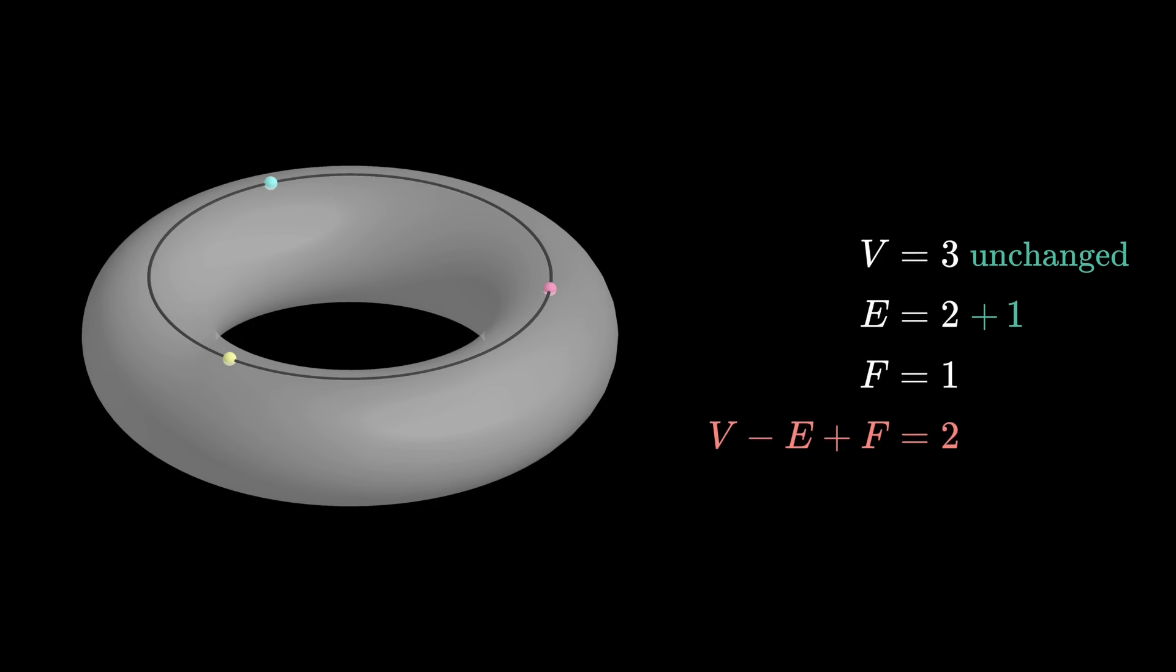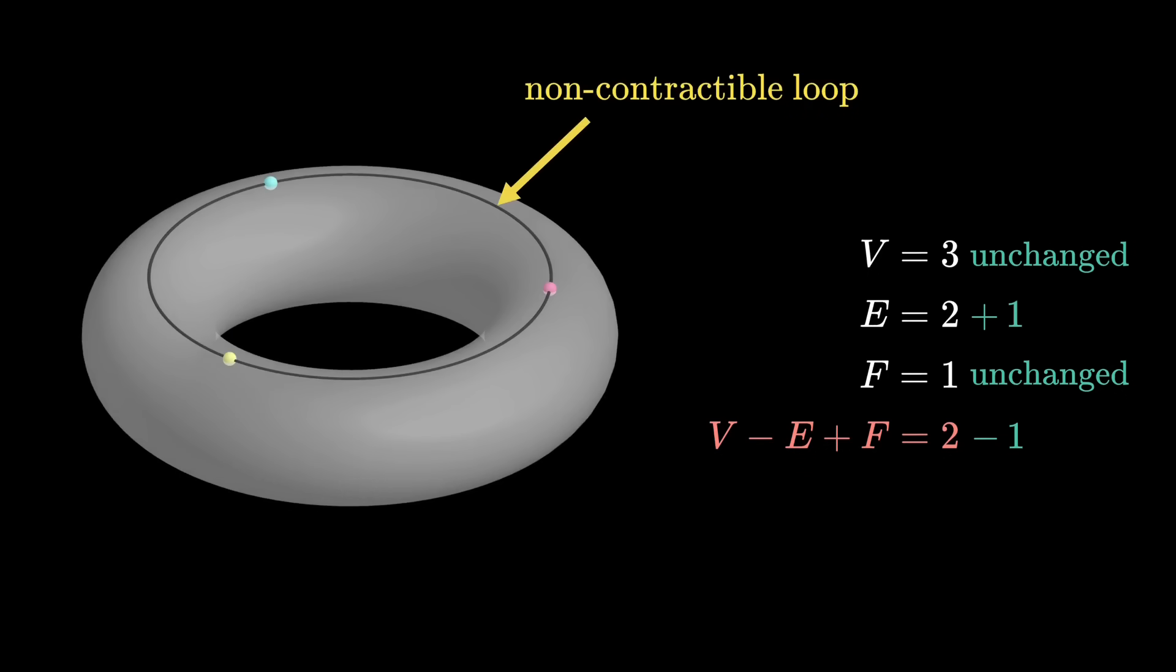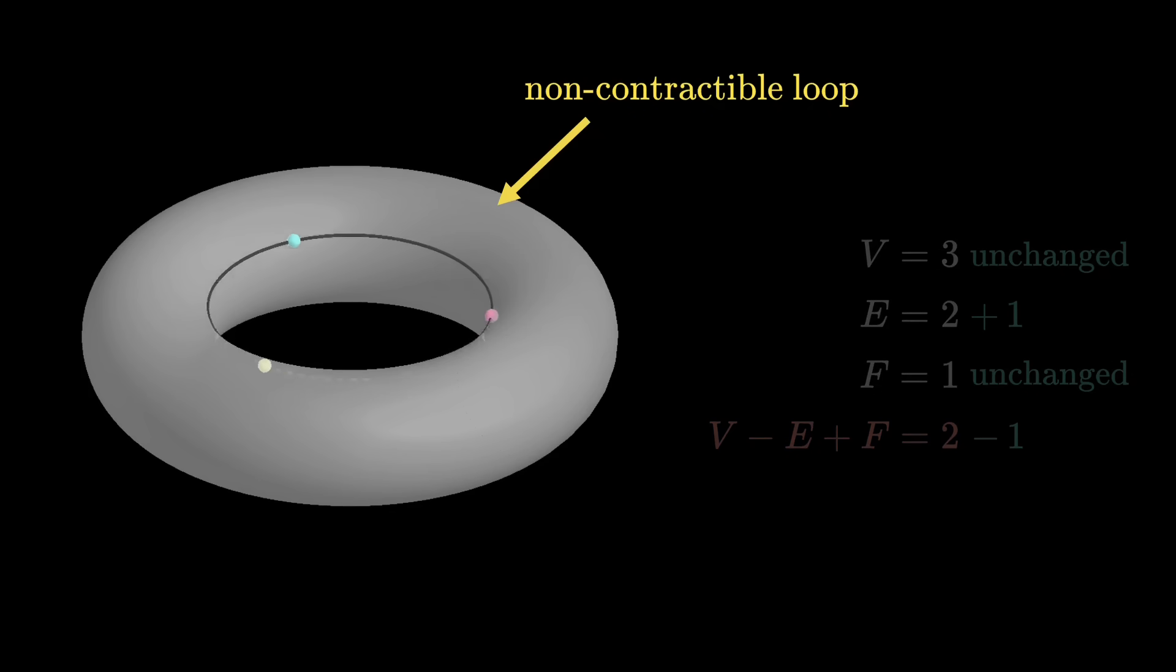However, this cycle doesn't help us create a face. There is still just one face, because you can go to the other side by going under. So with F and V unchanged, but E increasing by 1, the value of V minus E plus F actually decreases by 1, and is no longer 2. I've deliberately chosen this cycle because it's a non-contractable loop. That is, you can't contract this loop down to a point continuously on the torus. No matter what you do, you can't eliminate that hole. This is a key feature that separates a torus from a plane.